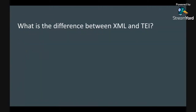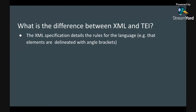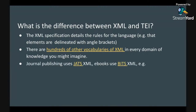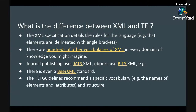What is the difference then between XML and TEI? The XML specification details the rules for the language — what elements are delineated with angle brackets and what vocabulary is used. There are other vocabularies you can use in XML across all kinds of domains. For example, people who publish journal articles use JATS XML, eBooks use BITS XML, and there's even a beer XML standard. The TEI guidelines recommend a specific vocabulary — the names of elements and attributes — and provide a structure that TEI documents follow.